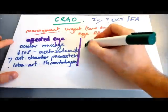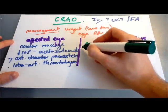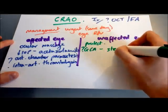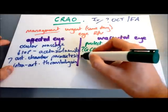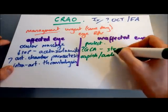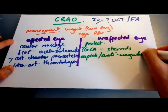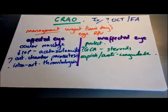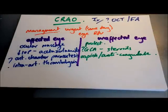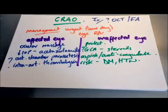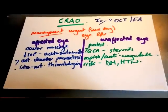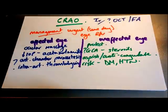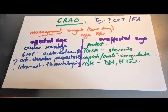To protect the unaffected eye from having occlusion of the retinal artery, look for the underlying cause. If there's any giant cell arteritis, give systemic steroids. Then try aspirin or other anticoagulation to prevent a stroke, which can be indicative of a risk factor for stroke. You want to treat any other risk factors as well — such as stopping smoking, treating diabetes and controlling hypertension.